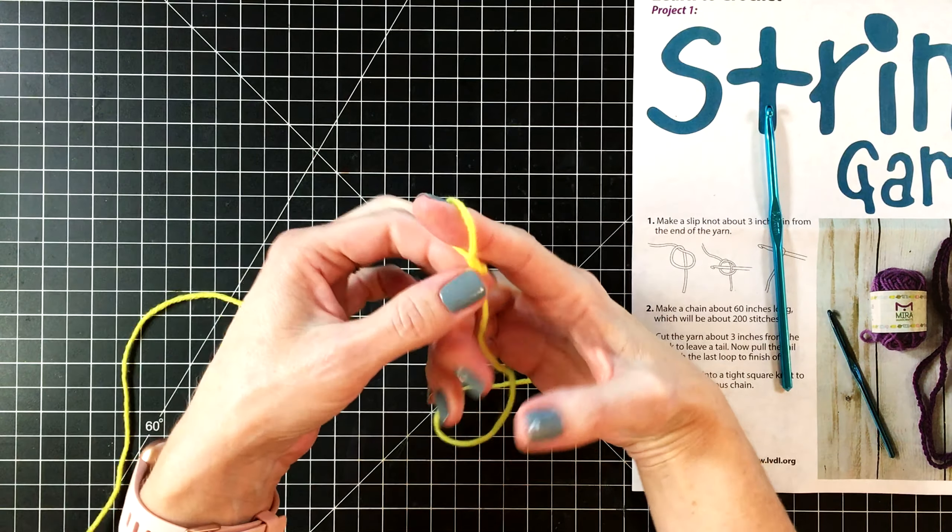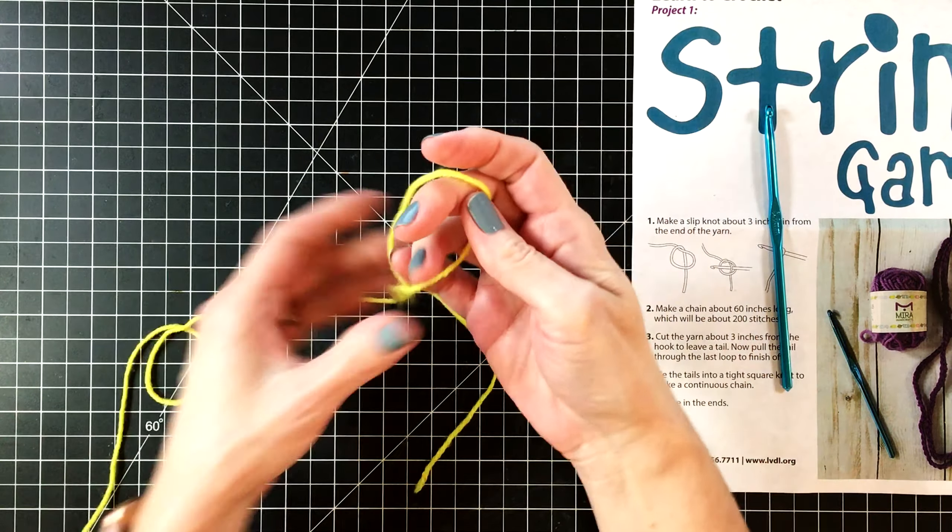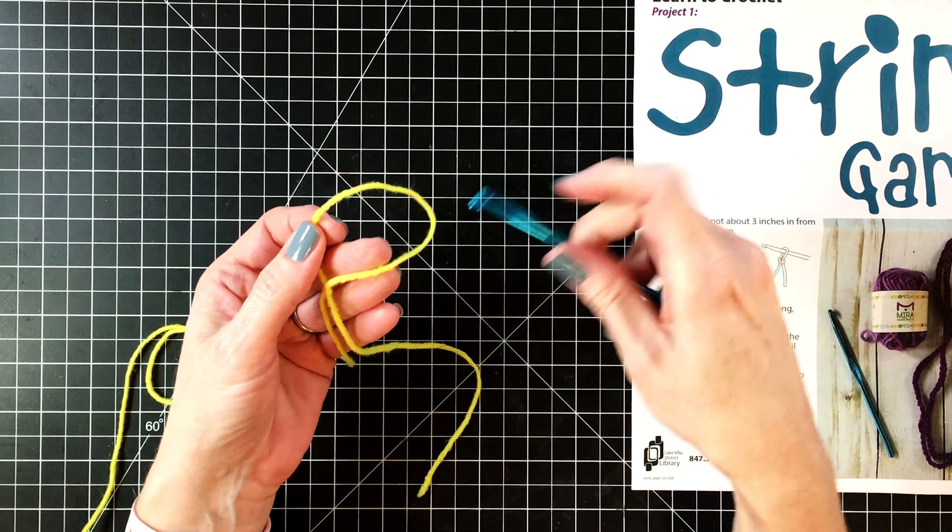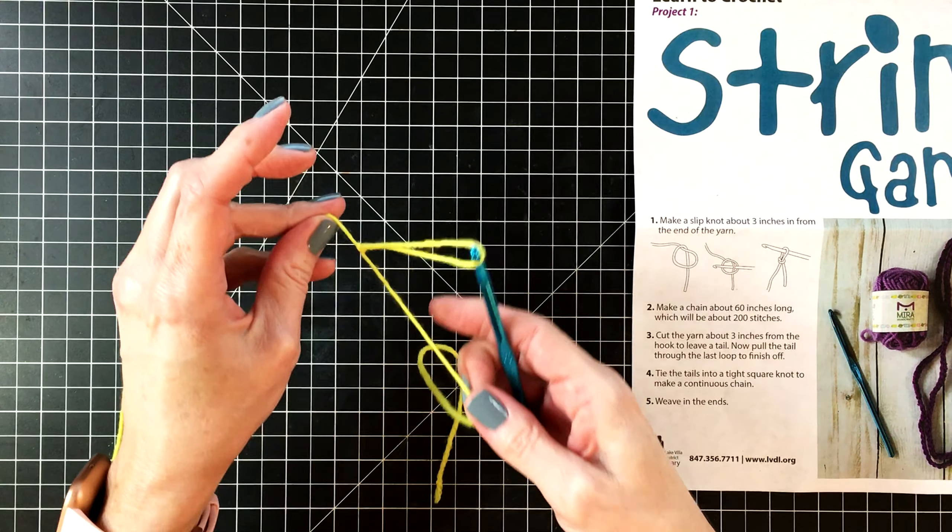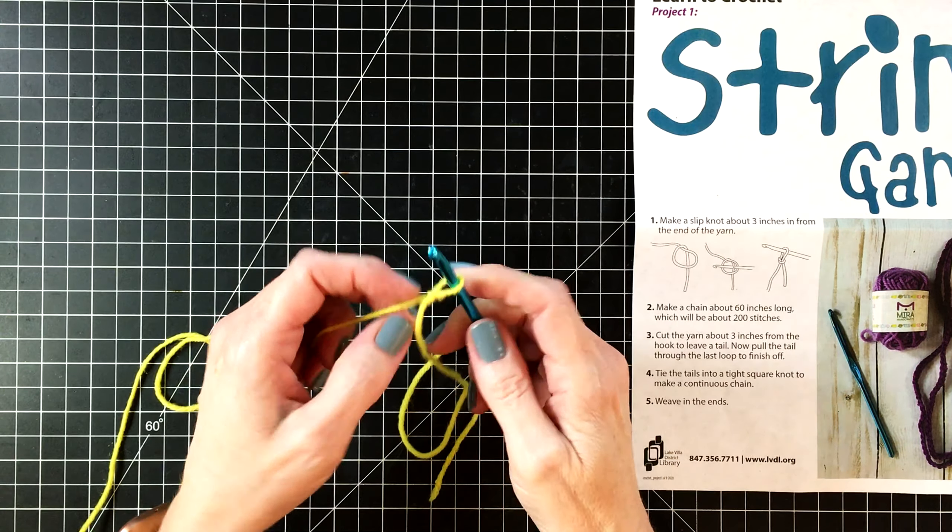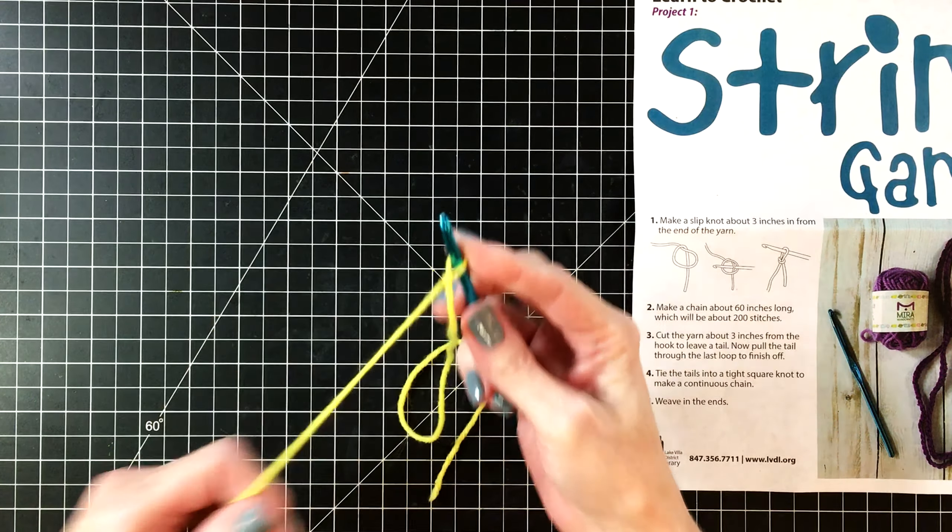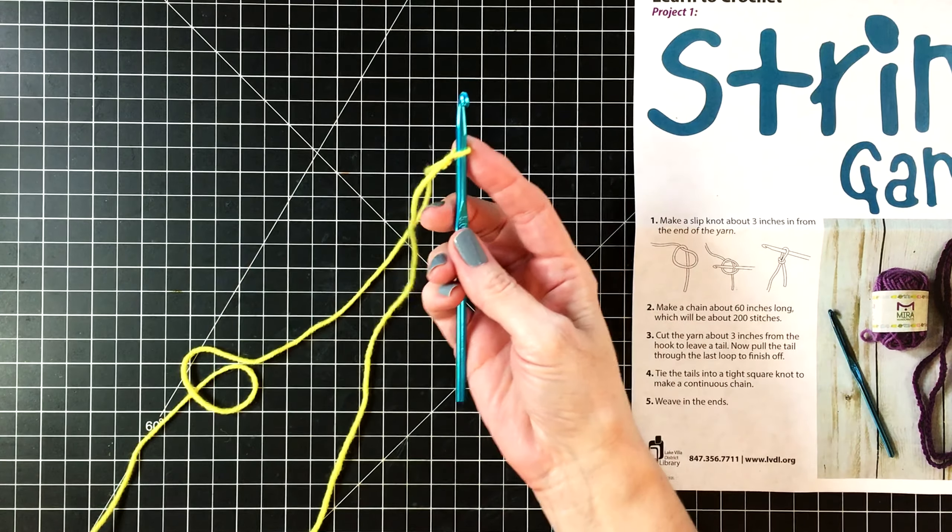And this creates your slipknot. You can loosen it or tighten it. And this is what's going to go on your crochet hook. So let's put this on our crochet hook and tighten it a little bit. You don't want it too tight or too loose. You want it to be able to slide up and down the crochet hook easily.